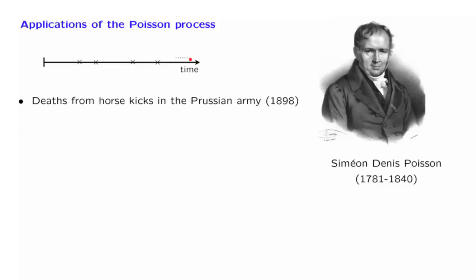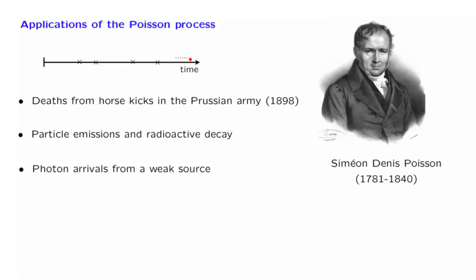For more scientific applications, it was realized that certain physical phenomena obey the Poisson process. For example, a radioactive body which decays does so by, once in a while, emitting various particles. Different particles get emitted at completely random times, in a completely uncoordinated manner, and therefore this process is actually described as a Poisson process.